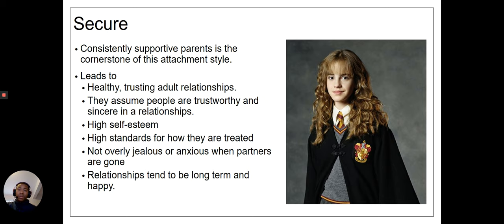If you read the books, it's pretty clear that her parents trusted her and were supportive, but also were concerned when she was in danger. She also has high self-esteem and trusts others and herself. Think of her as an example of someone who fits that secure attachment style. Some of the hallmarks are healthy, trusting adult relationships, high standards for how they're treated, and relationships that tend to be long-term and happy.